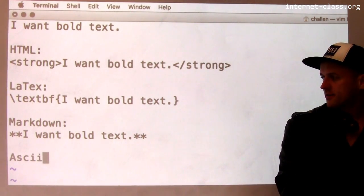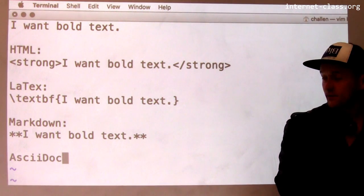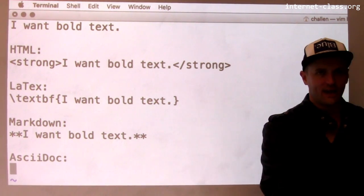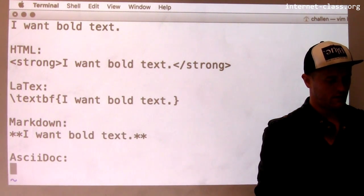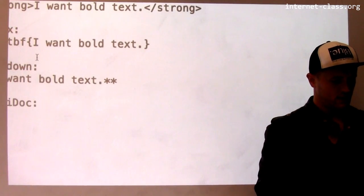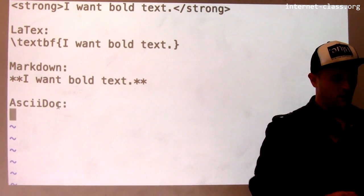Here's another example. There's another markup language that I like that's called ASCII doc. Let's see, I need to scroll down here. Here we go.